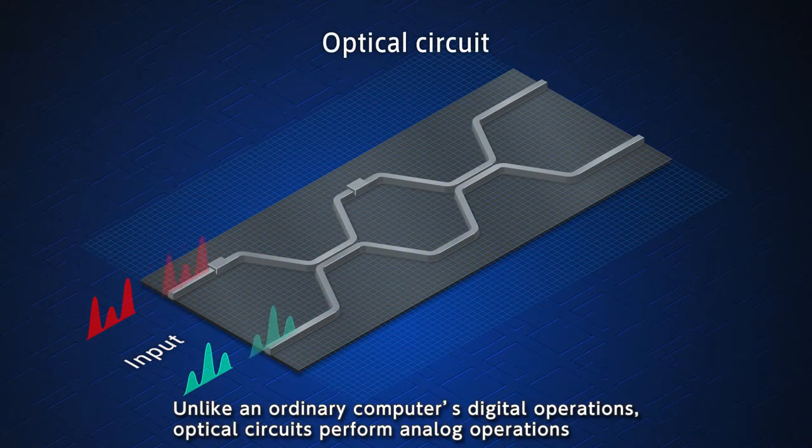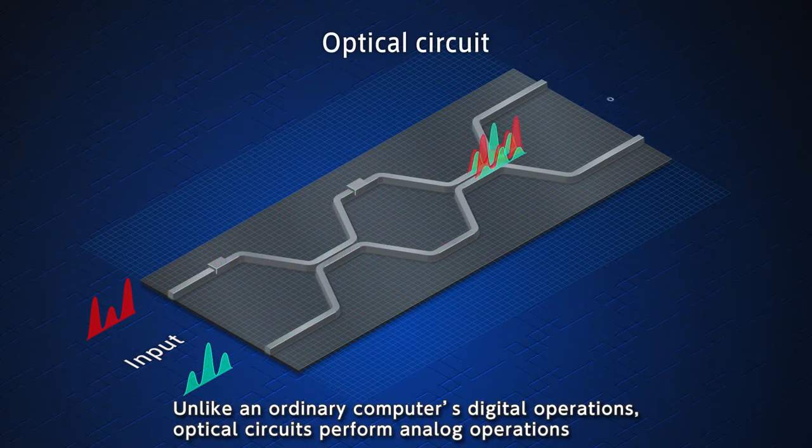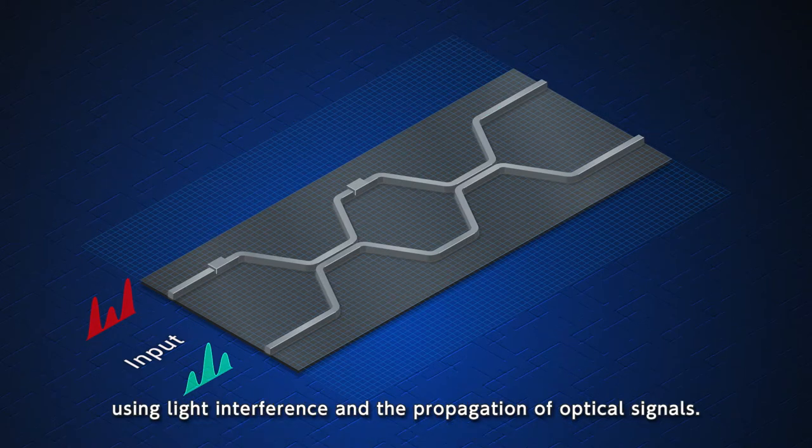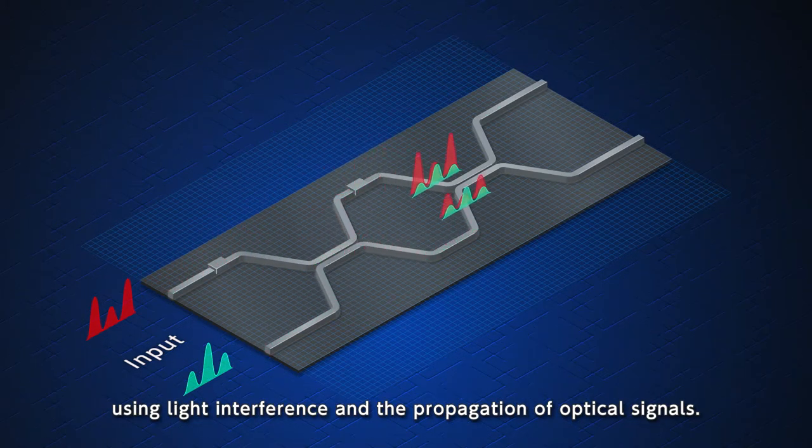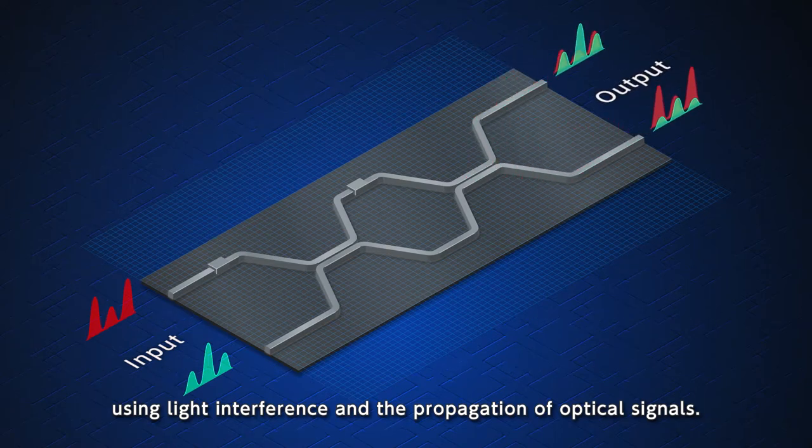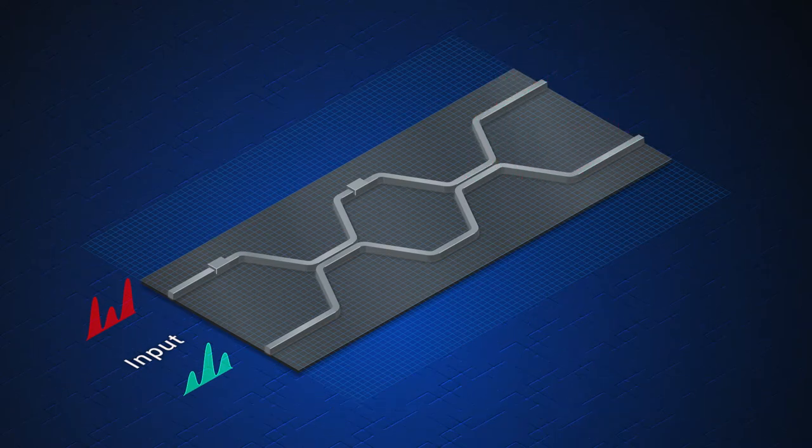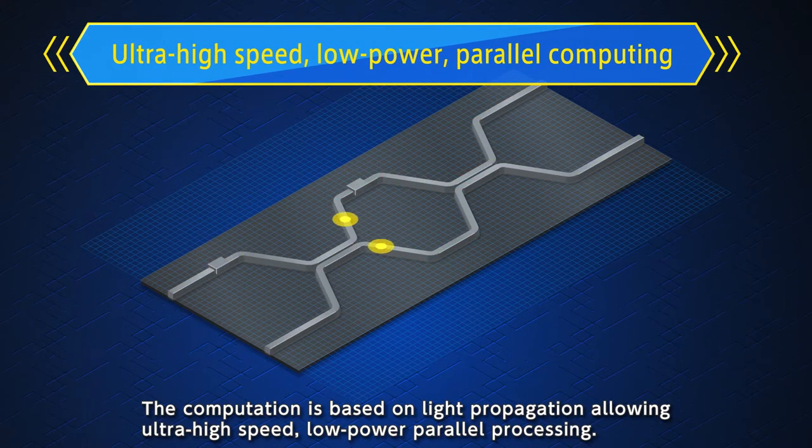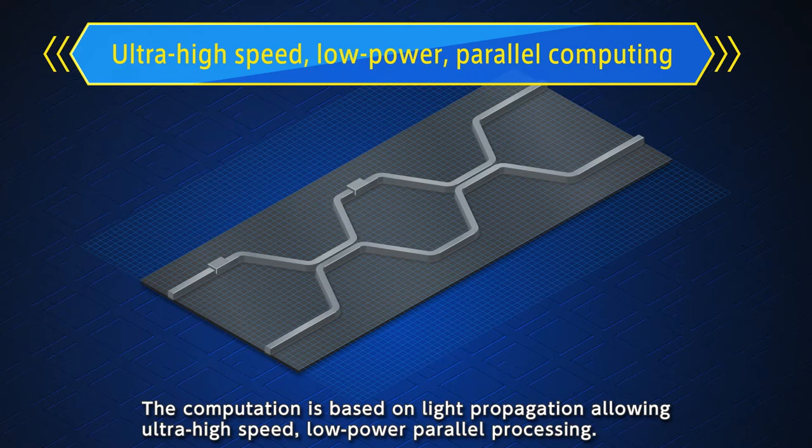Unlike an ordinary computer's digital operations, optical circuits perform analog operations using light interference and the propagation of optical signals. The computation is based on light propagation, allowing ultra-high-speed, low-power parallel processing.